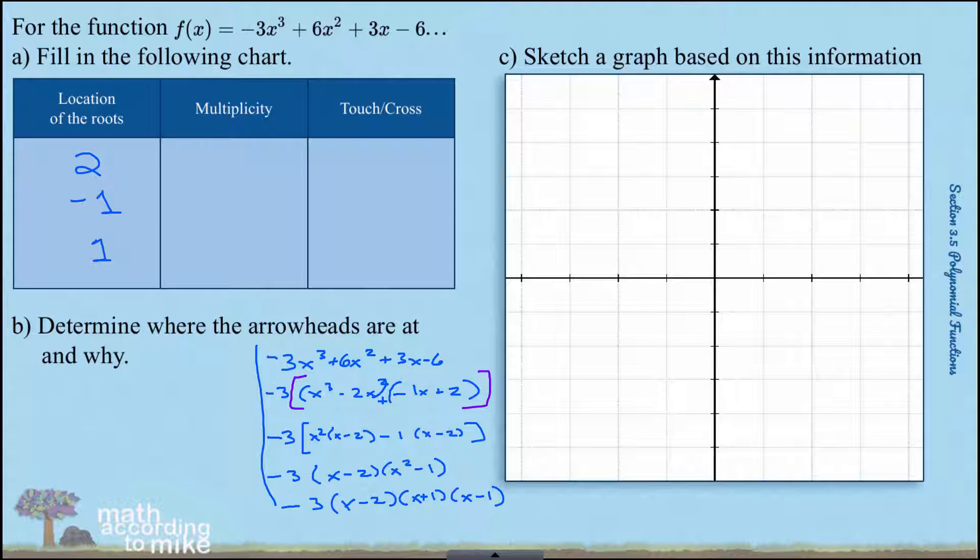Looking at the factored form of the function, notice all of the exponents on the factors are 1. Since our multiplicities are odd, this will cross. So we have cross, cross, cross, triplet cross. Remember, if you add up the multiplicities, you should always get the degree. So we do add up to 3.